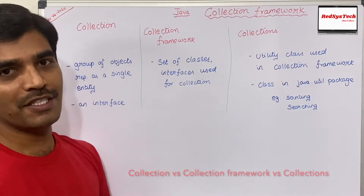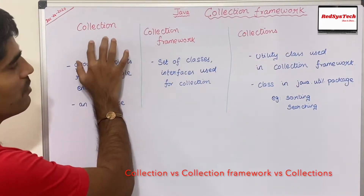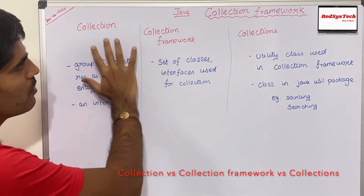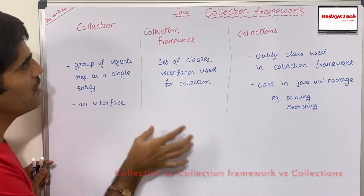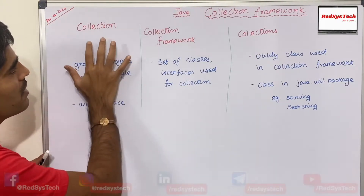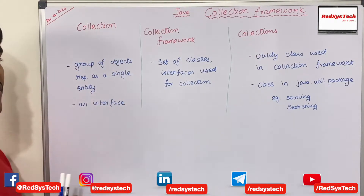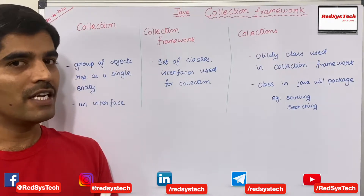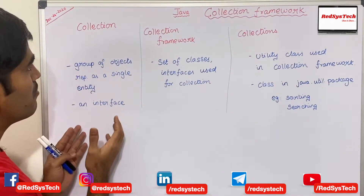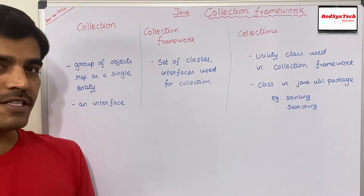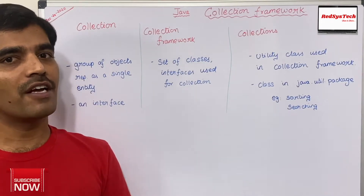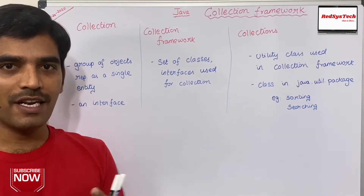How or what is the difference between these three? So collection — if you see the words: collection, collection framework, and collections — they look like all are the same, but there is a difference. Collection is nothing but a group of objects which we can represent as a single entity. In our previous video, we have seen about what is a collection, and this is nothing but an interface. Basically using the interface, we can say a group of objects where you can represent it as a single entity.